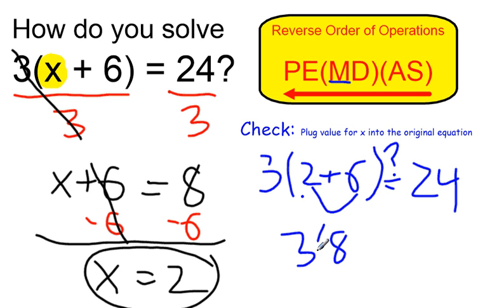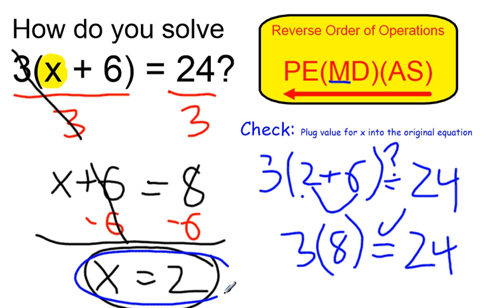And yes, 3 times 8 does equal 24. So I know that x equals 2 is in fact the correct answer. Thank you.